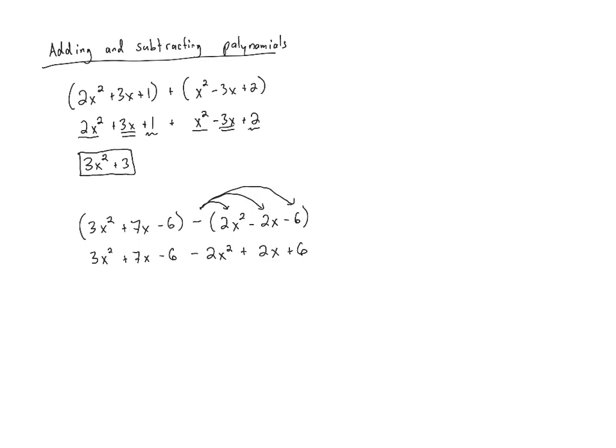So we rewrite it like this. And now, once we've distributed that subtraction, we're able to combine like terms. 3x² minus 2x² is x². 7x plus 2x is 9x. And negative 6 plus 6 is 0, those terms cancel. So all we're left with is x² + 9x.